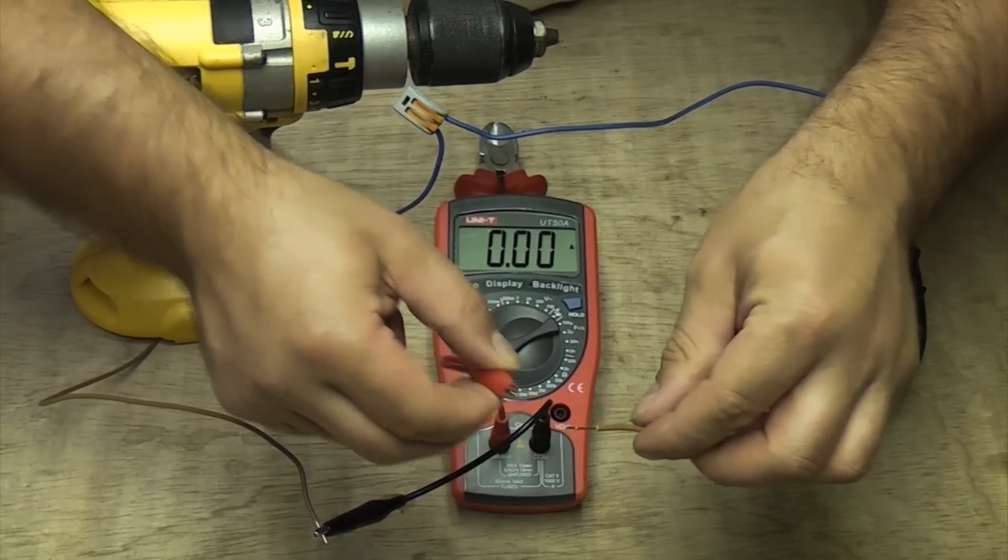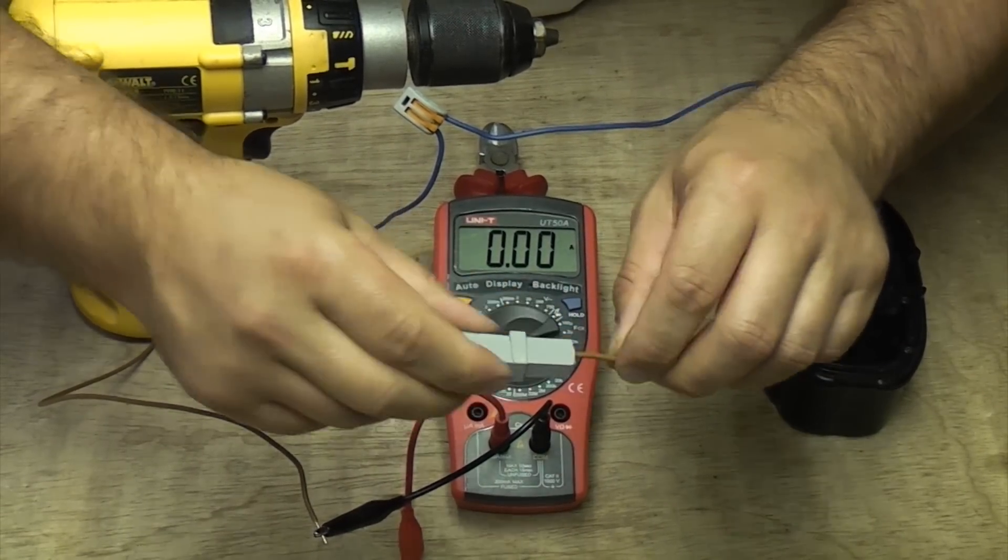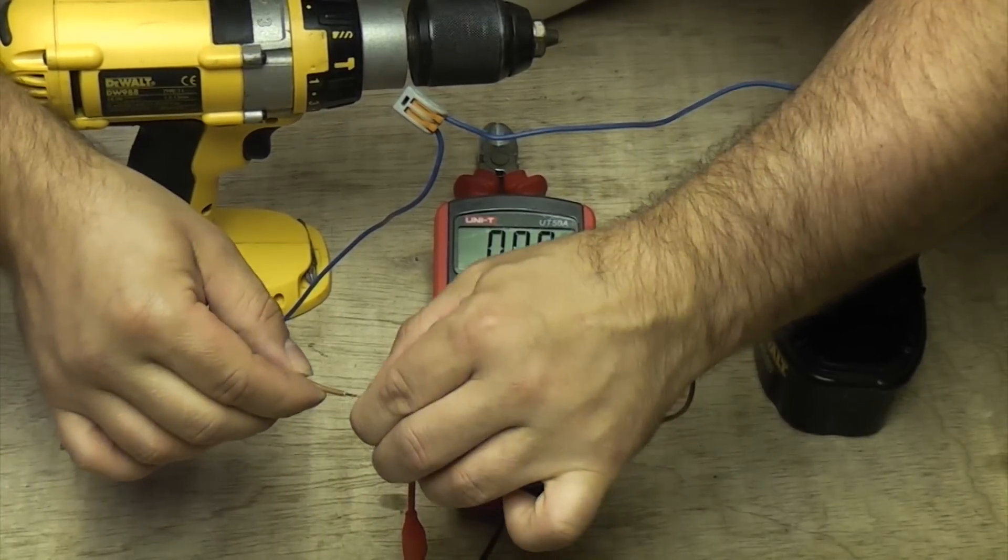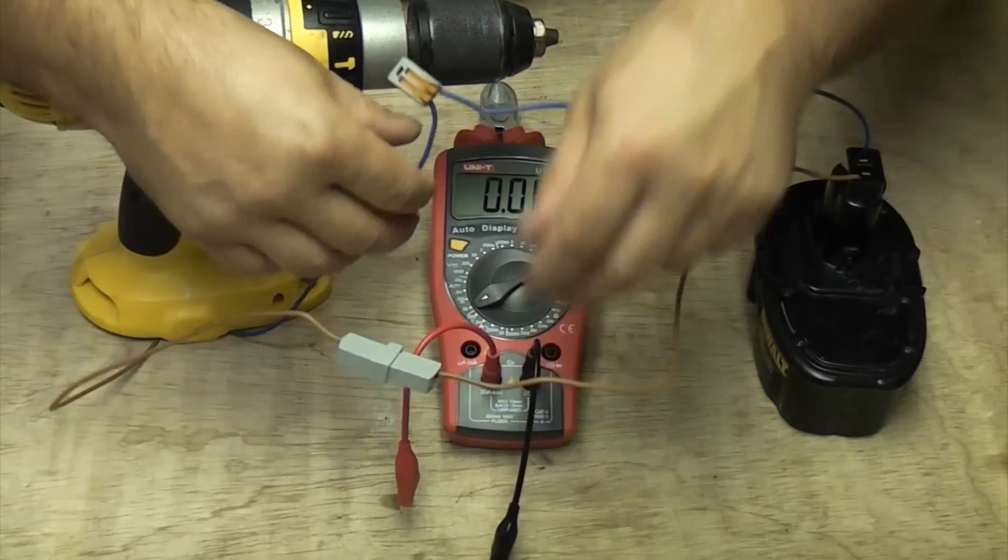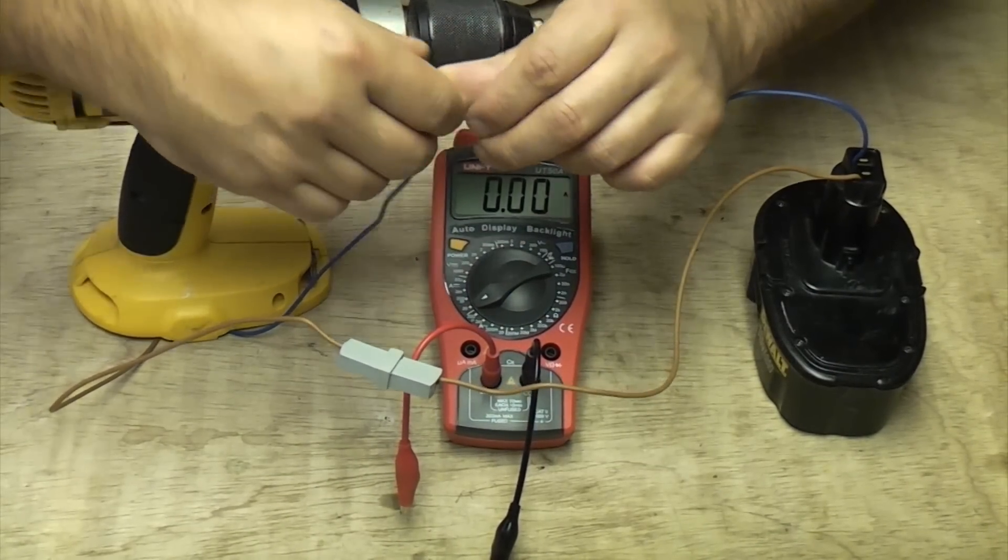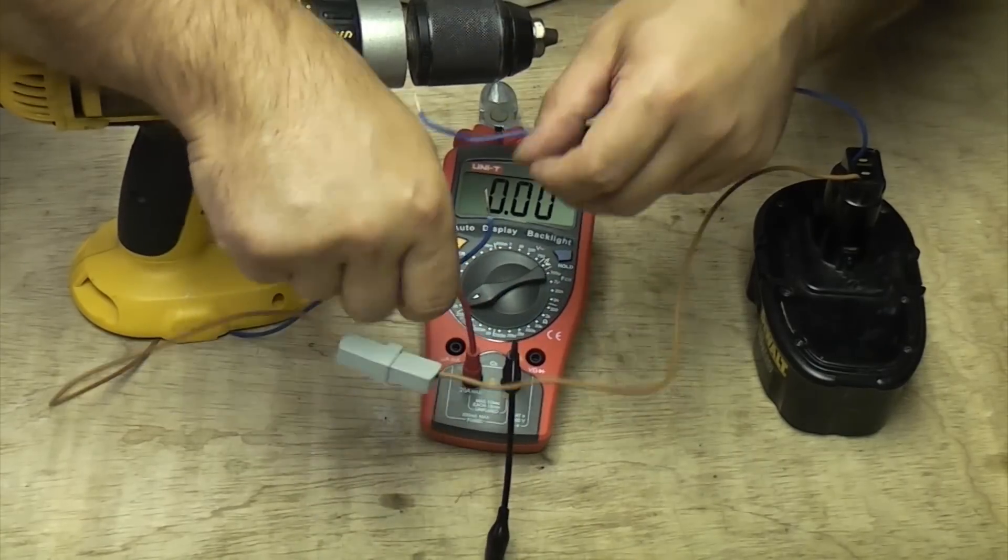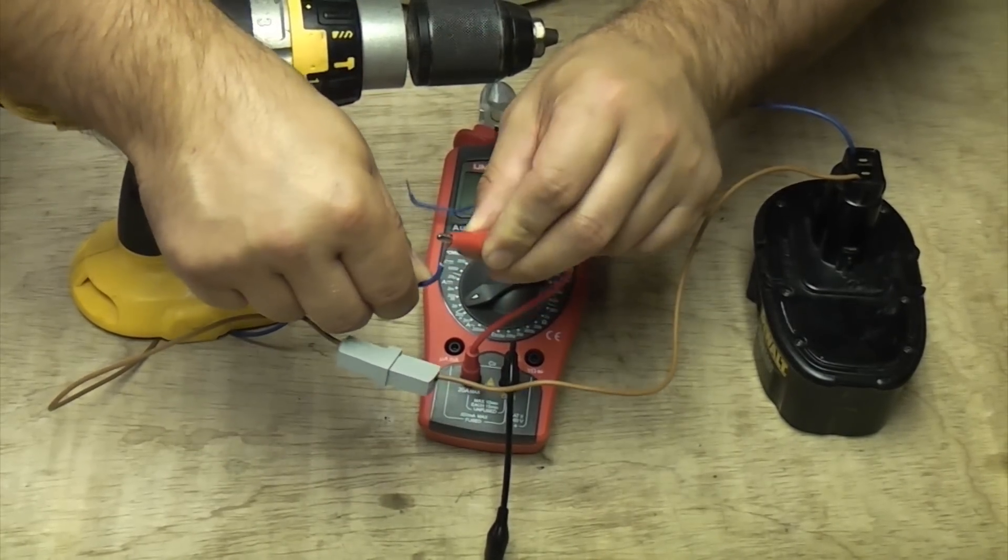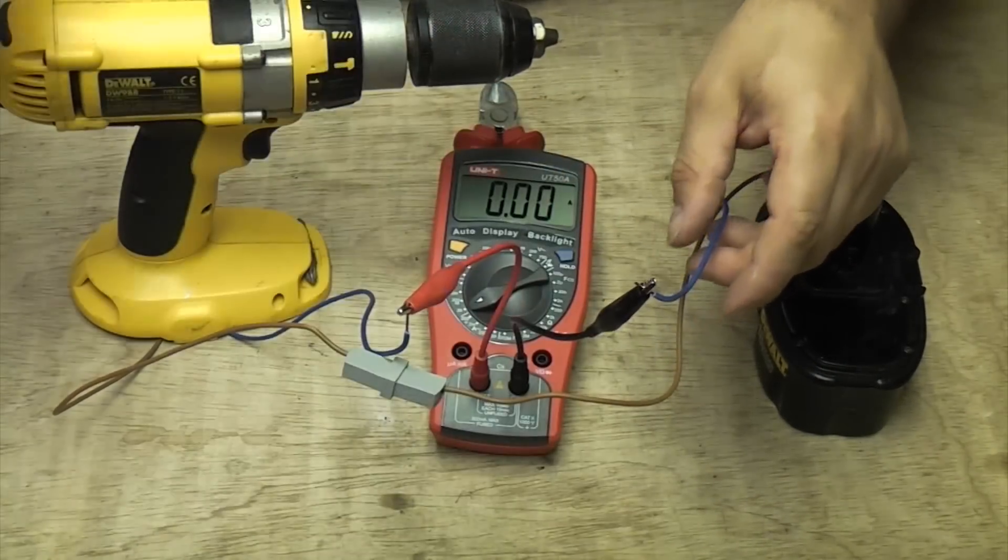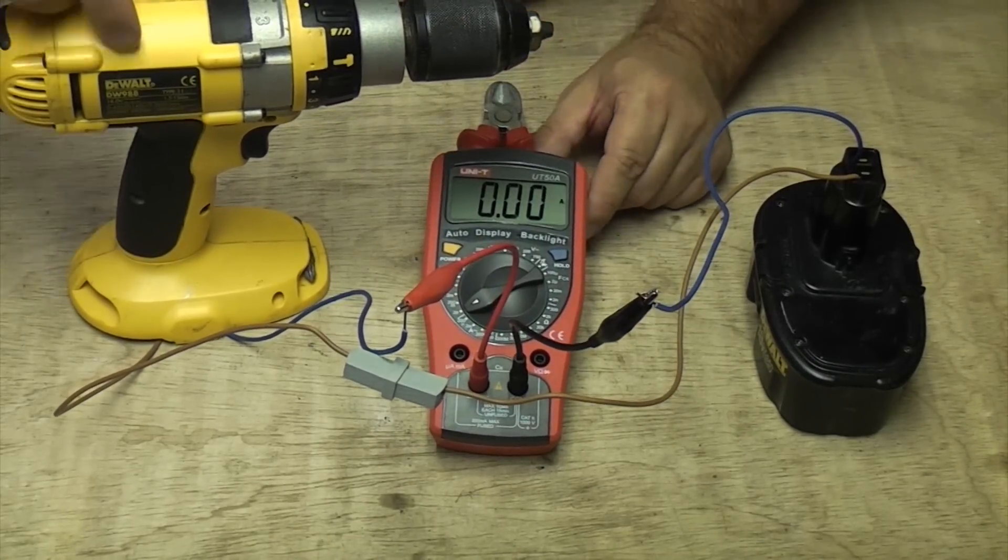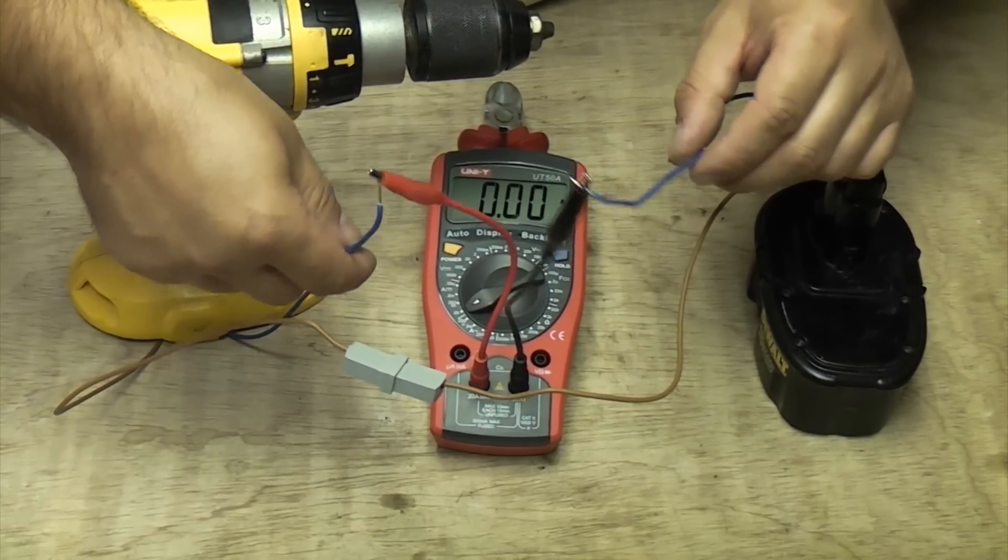So if we just put this side back now and I'll show you again on the neutral side. So again we've broken into the circuit and the meter is now in between the neutral side.